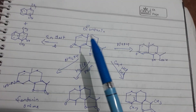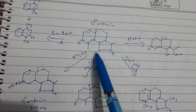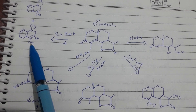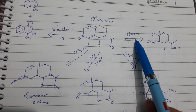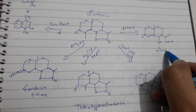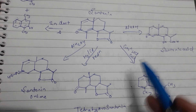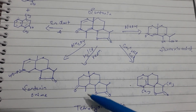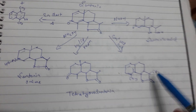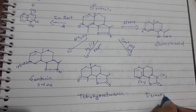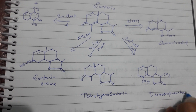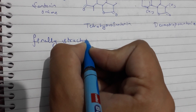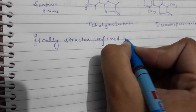Summary of common reactions: reaction with zinc dust gives dimethyl naphthalene and dimethyl naphthol; reaction with NaOH gives Centonic acid; reaction with NH2OH forms Centonin oxime; reduction gives tetrahydrocentonin; concentrated HCl gives isomerized product. Finally, the structure is confirmed by synthesis.